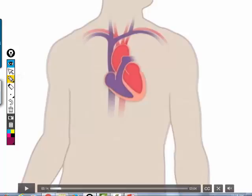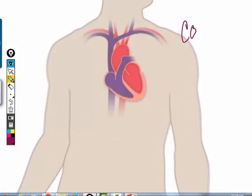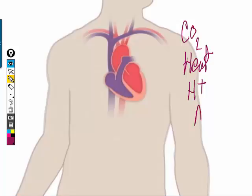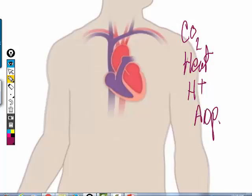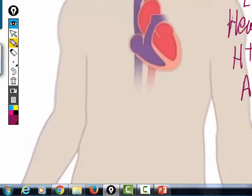What are the byproducts of metabolism? Heat, CO2, hydrogen ions, ADP — and those cells are lacking oxygen, at least once they become more metabolically active.